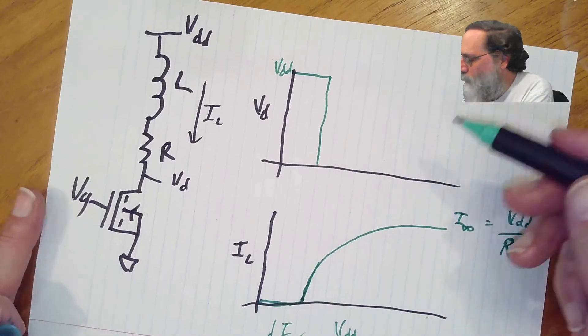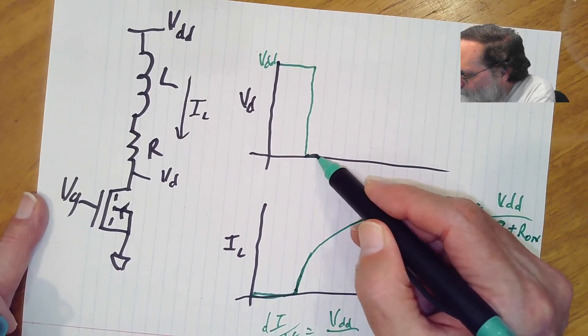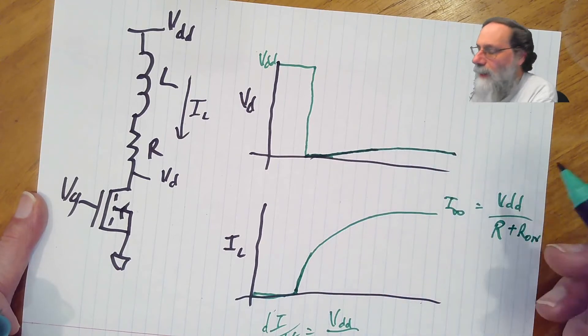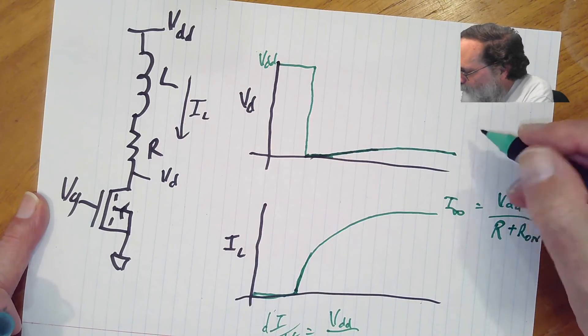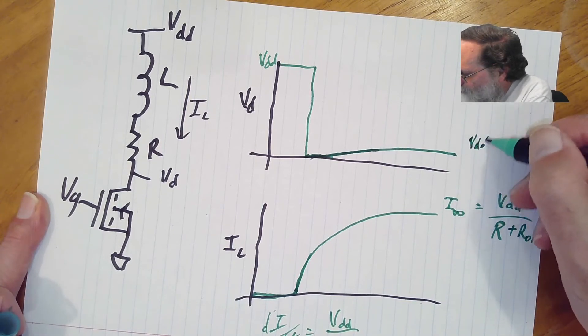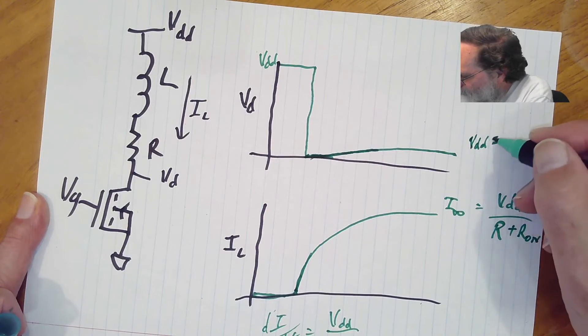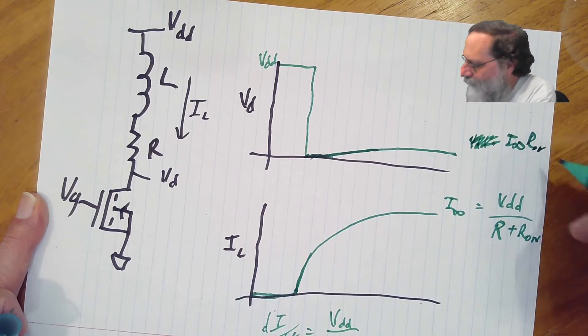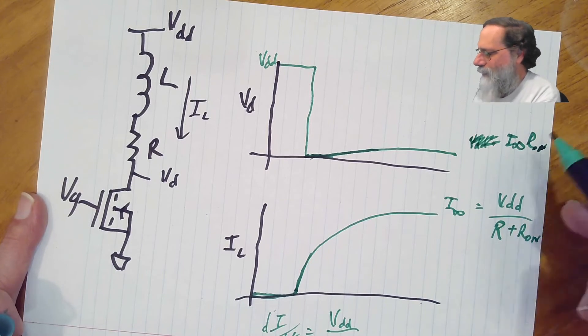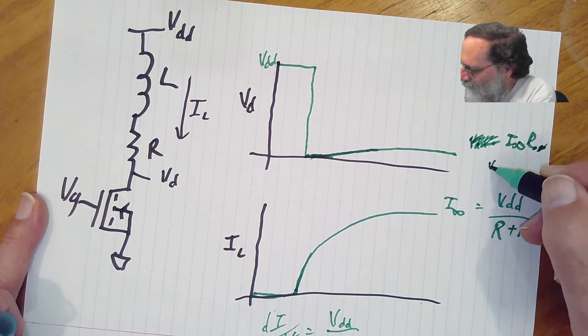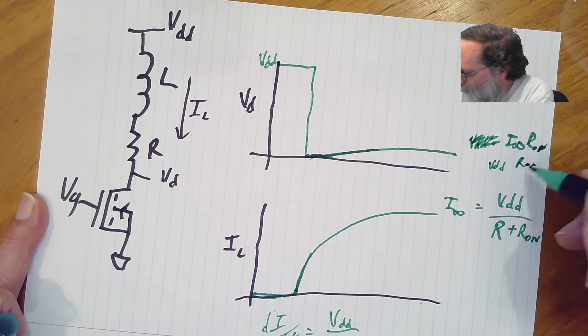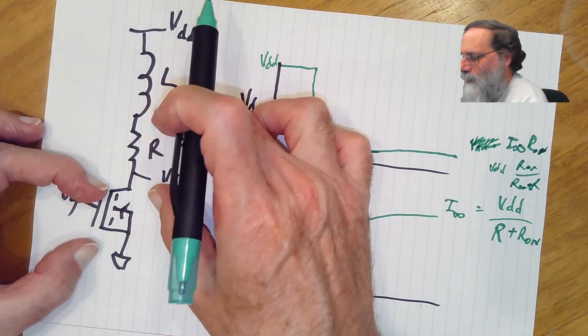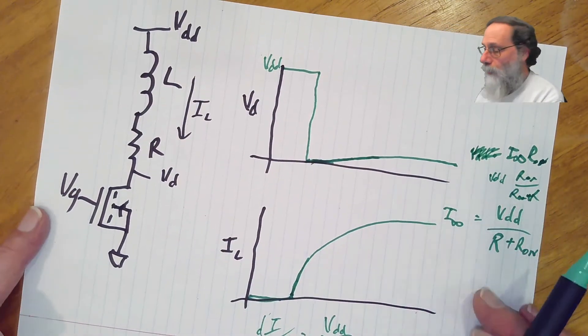Because what's going to happen with the voltage here is initially it drops, but as the current builds up, we're going to have a little bit of increase on here, and the voltage here is eventually going to be I infinity times Ron. And you can write that as VDD times Ron over Ron plus R. So just voltage divider, resistor here, resistor here, the inductor no longer will be doing anything, there'll be no voltage drop across it.